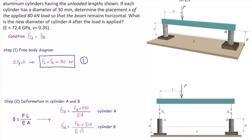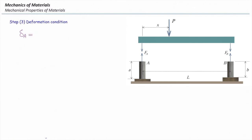Now, let's apply the compatibility condition. We want to have the same displacement in these two cylinders. Delta A is equal to delta B.